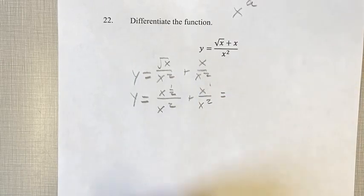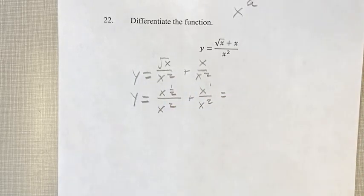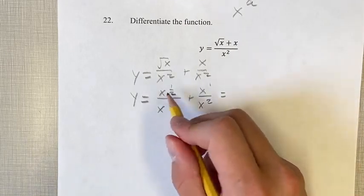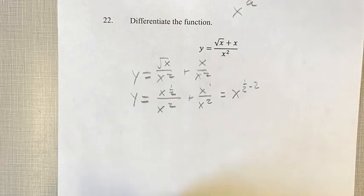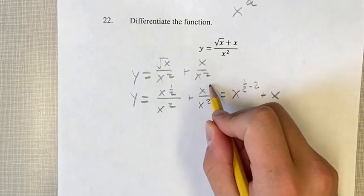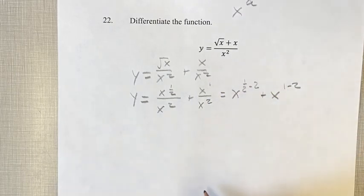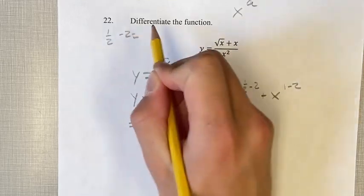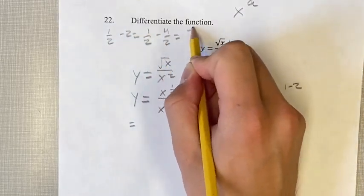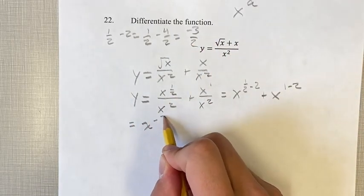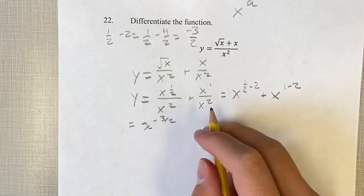This is going to be equal to... for dividing these, we can subtract the exponents, right? So this one is x to the one-half minus two, which is the quotient rule for powers, plus x, subtract them, one minus two. One-half minus two is one-half minus four over two, which is negative three-halves. So x to the negative three-halves, and one minus two is negative one.